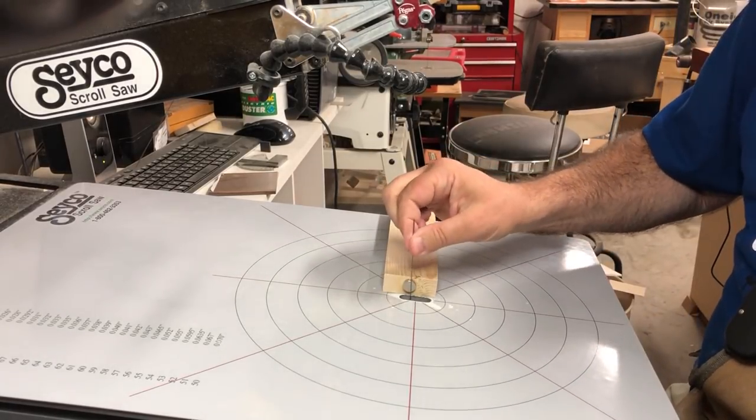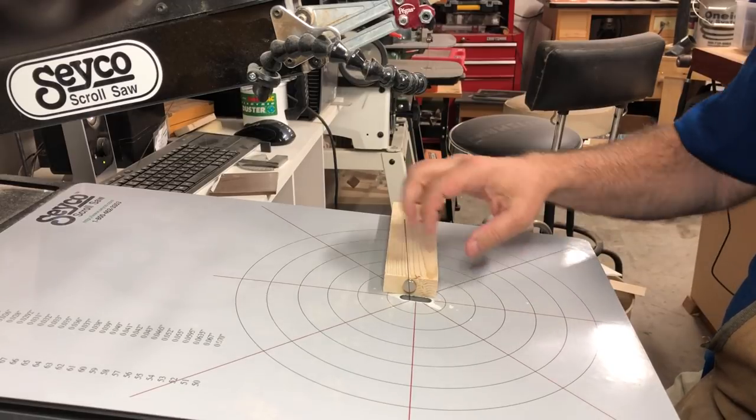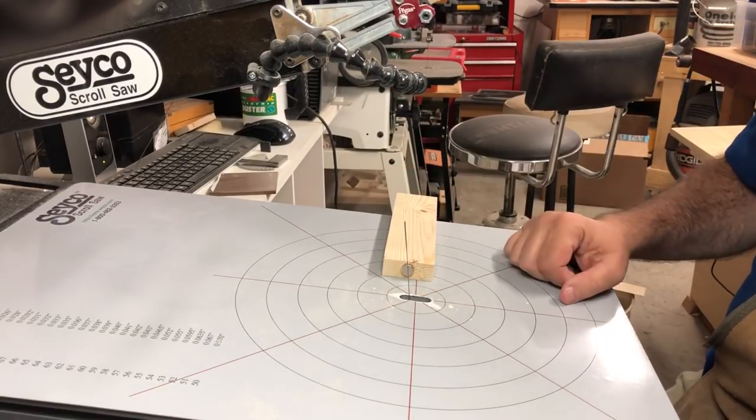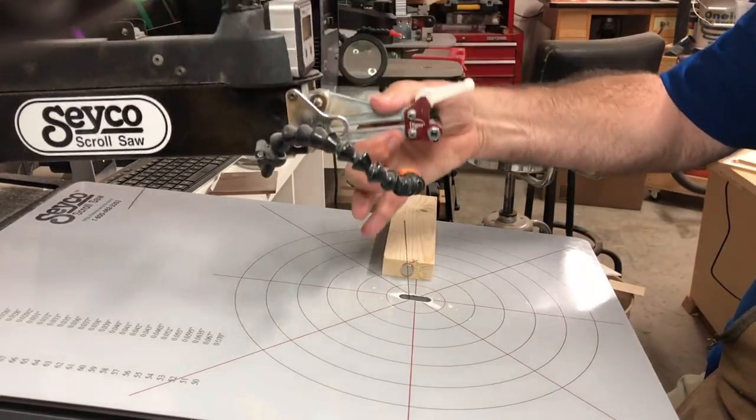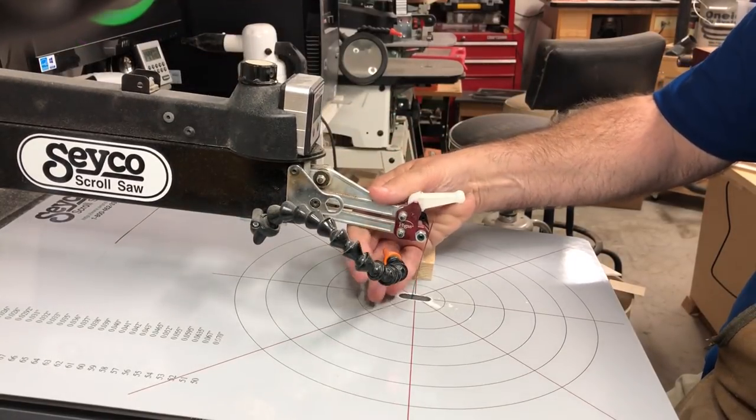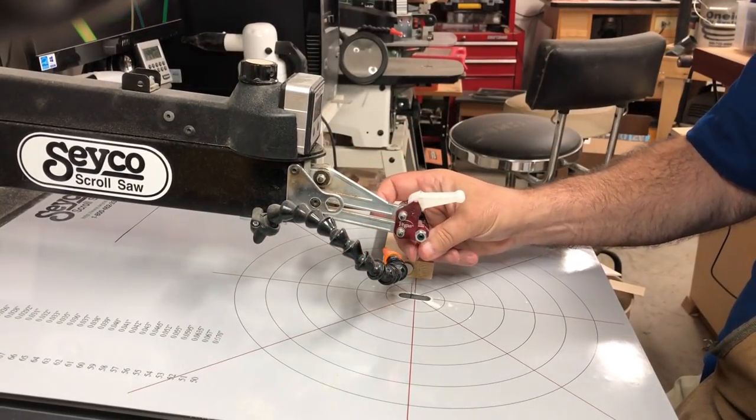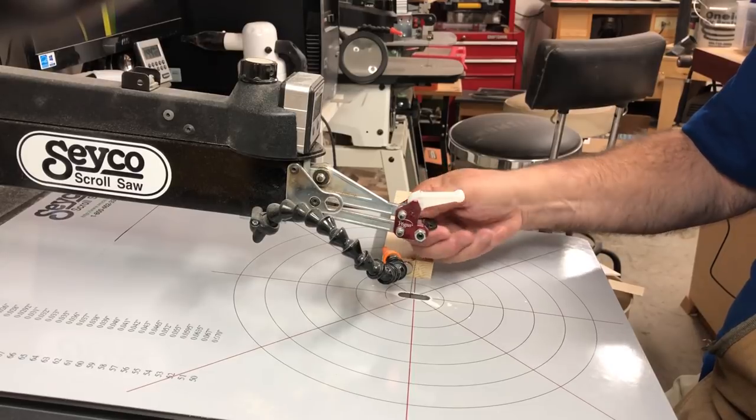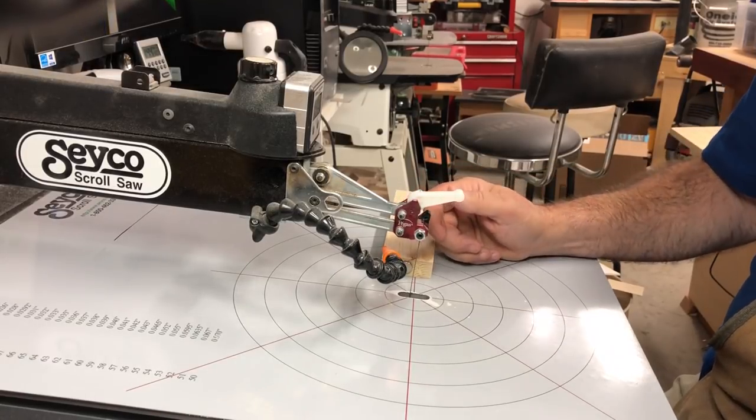I've got the blade clamped into the lower clamp. I can then move the magnet away, still with just one hand. I can lower the upper arm, place the blade in the upper clamp.